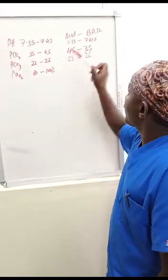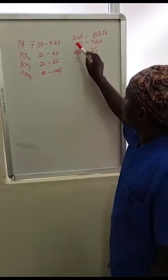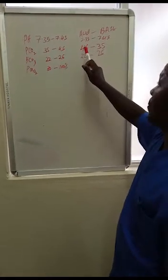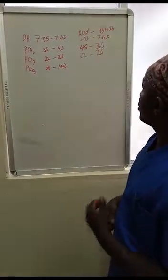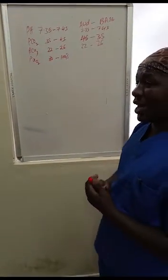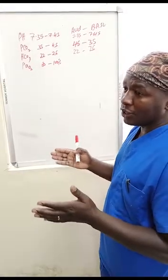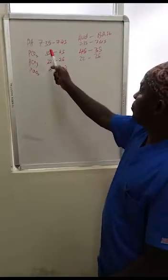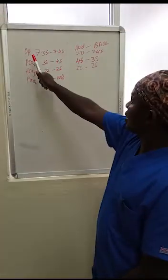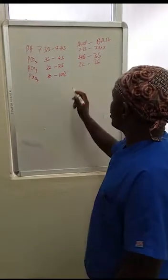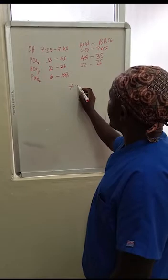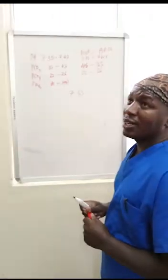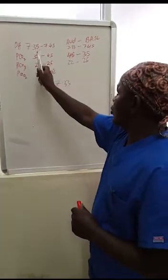Step one when analyzing a blood gas: check the pH to determine if the patient is in acidosis or alkalosis. For example, if the pH is 7.33, the pH is low, so the patient is in an acidotic state — this is acidosis. If pH goes up to 7.50, the patient is in alkalosis.